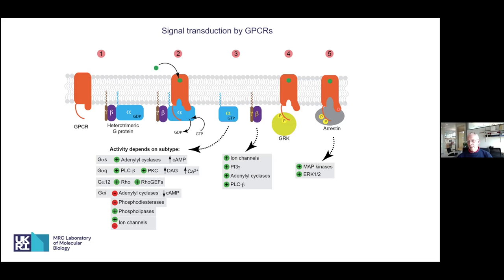Phosphorylation allows coupling of arrestin and shutting off of G protein signaling, but arrestin can signal in its own right. From the drug discovery perspective, some therapeutic effects may be driven through G protein coupling, but adverse effects may be driven through arrestin coupling. There's a lot of interest in comparing different structures with arrestin-bound versus G protein-bound, and whether we can develop tailor-made drugs which only signal through a specific pathway.